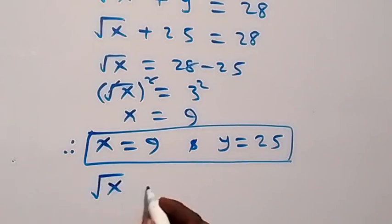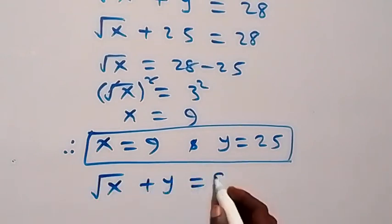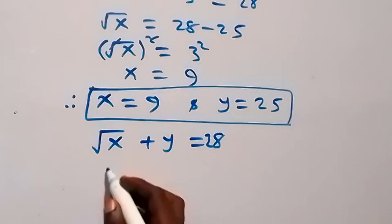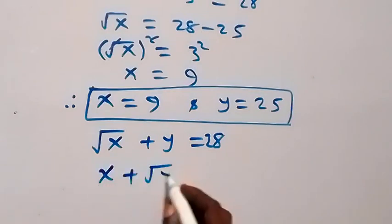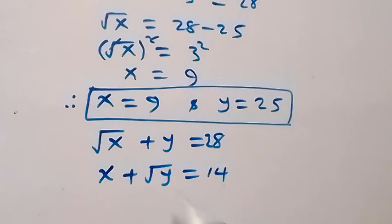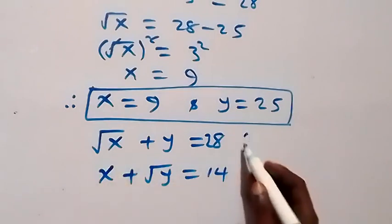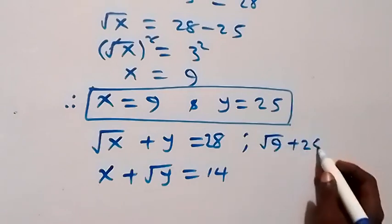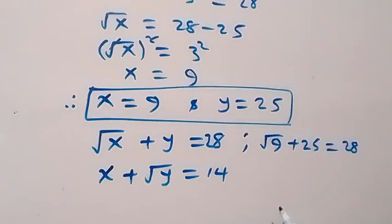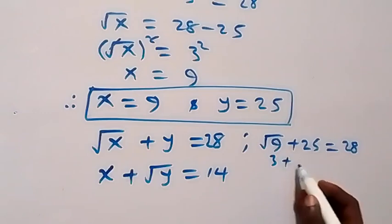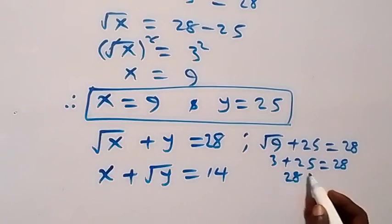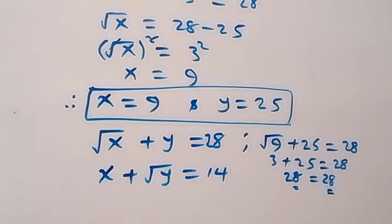From what is given, equation 1 is √x + y = 28. Substituting x = 9 and y = 25: √9 + 25 = 3 + 25 = 28, which equals 28. Left-hand side equals the right-hand side, so it satisfies the first equation.